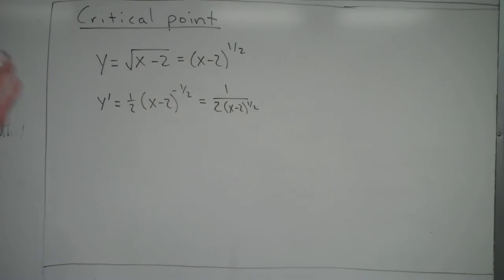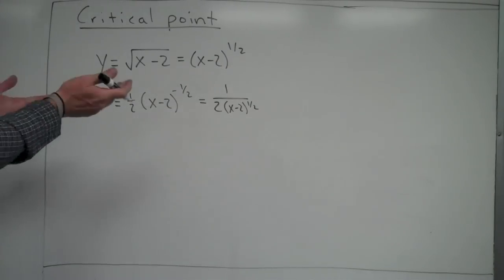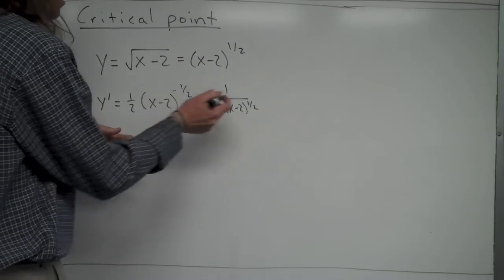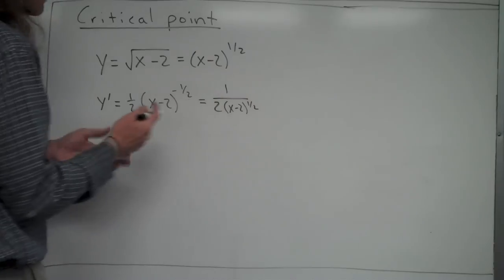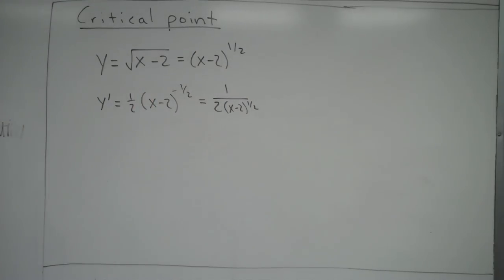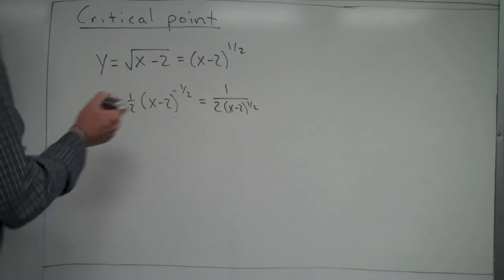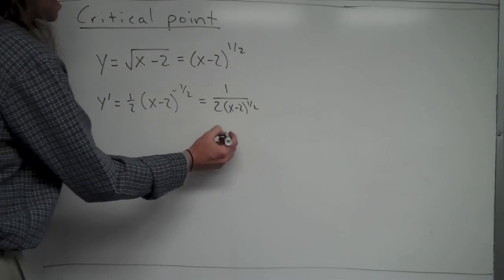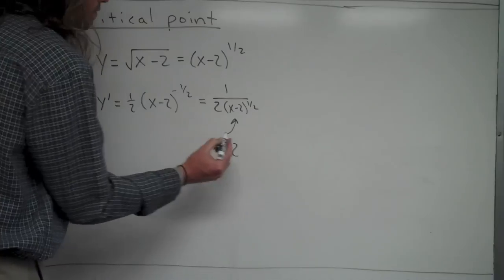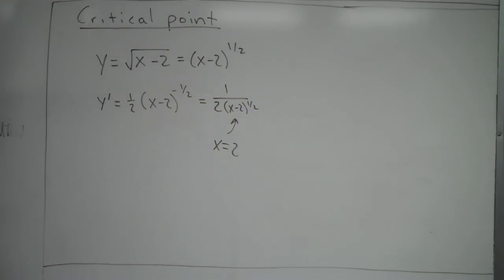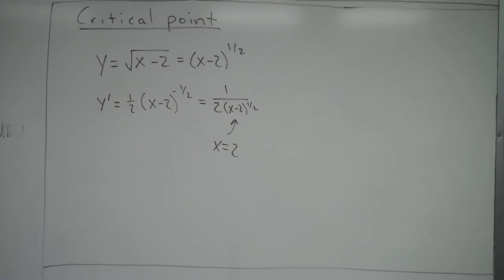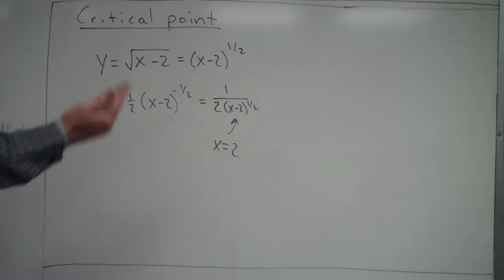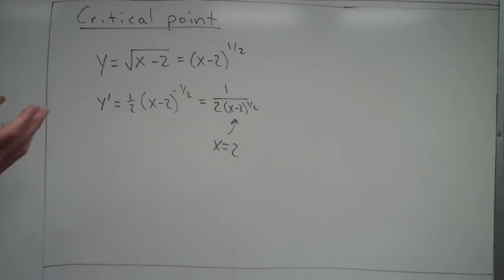Rewriting the derivative: it becomes 1 over 2 times (x - 2)^(1/2), or equivalently 1 over 2 times √(x - 2). Looking for critical points, this derivative never equals zero because the numerator is 1. However, the derivative is undefined when x = 2, because plugging 2 in gives 0 in the denominator, making it 1 over 0 — which is undefined.